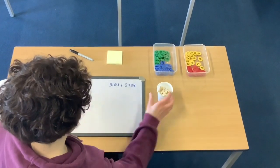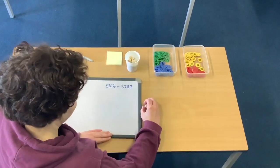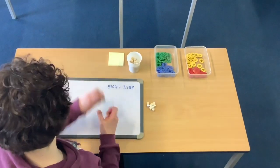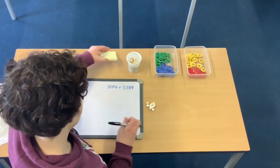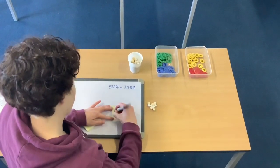The next question we are going to have a go at answering is 5,104 and 3,789. So in this case we are going to use the cubes to represent our number concretely. So we are going to use post-it notes to label our columns.